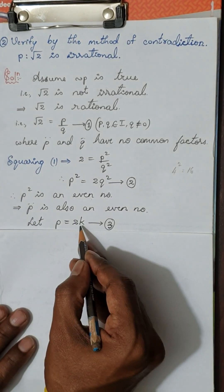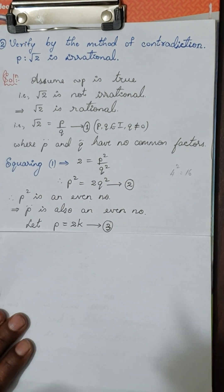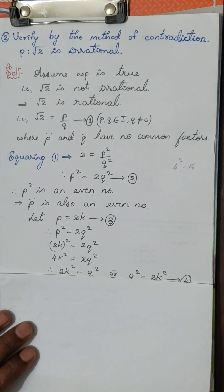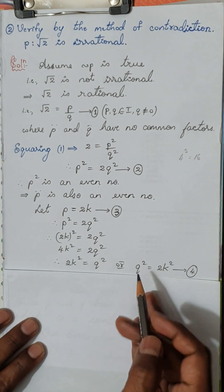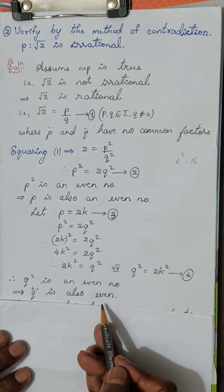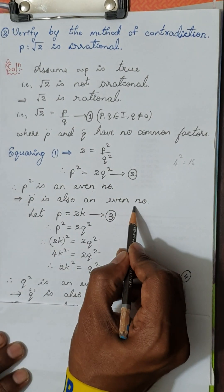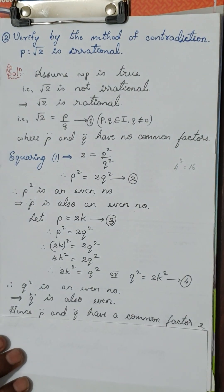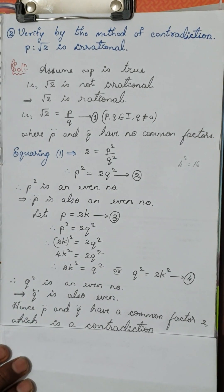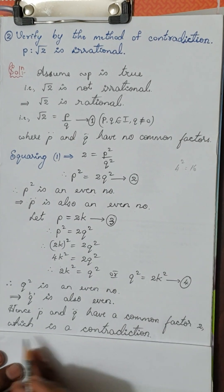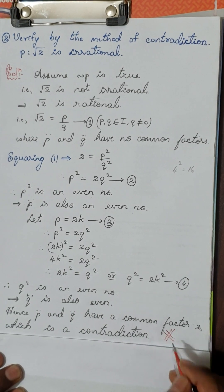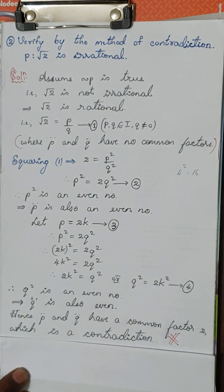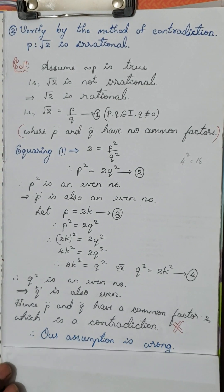Since P is even, P can be written as 2K. Substituting this, I get Q squared equal to 2 times K squared, which means Q is also an even number. So both P and Q are even, meaning 2 is a common factor of P and Q. This is a contradiction since we assumed P and Q have no common factor other than 1. Therefore our assumption is wrong.